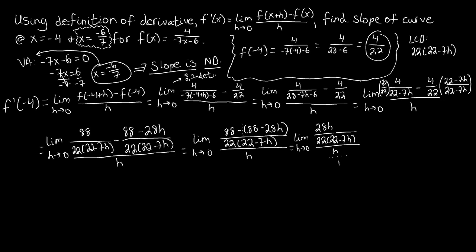Writing h as h over 1, we multiply by the reciprocal instead of dividing by a fraction. The h in the numerator and denominator cancel, leaving us with the limit as h approaches 0 of 28 over 22 times 22 minus 7h.